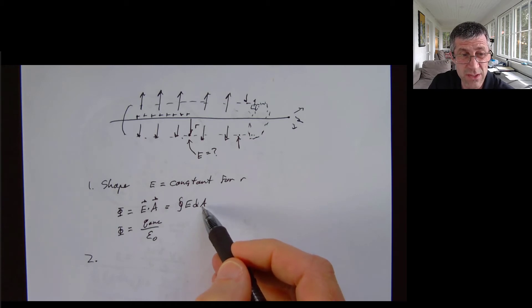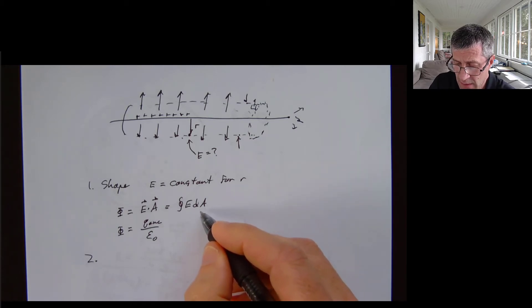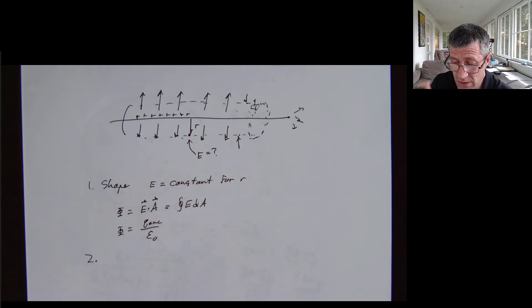So two things I always have to sort out. So I have to sort out, what's my surface area of my Gaussian surface. And second of all, what's my enclosed charge?